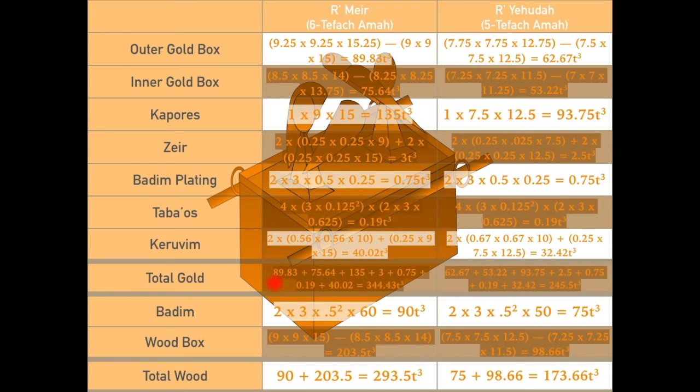Overall, Rabbi Meir holds that there was 344.43 cubic tefachim of gold and 293.5 cubic tefachim of wood, while Rabbi Yehuda holds that there was 245.5 cubic tefachim of gold and 173.66 cubic tefachim of wood.